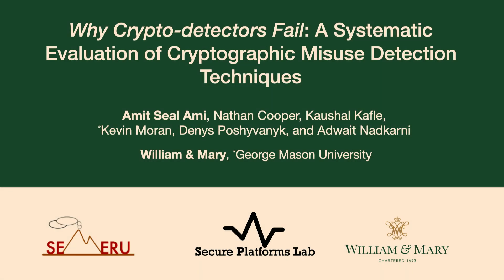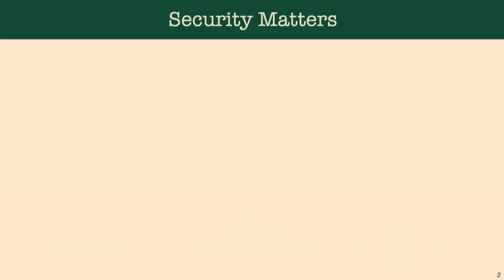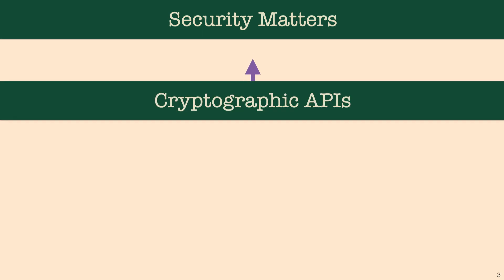Thank you, Dominic, for the introduction. Today I'm here to discuss why cryptodetectors fail. We all know that security matters — that's why we are here — and we generally depend on cryptographic APIs to implement our security functionalities, because it's otherwise really easy to mess things up.